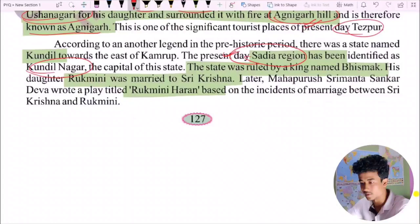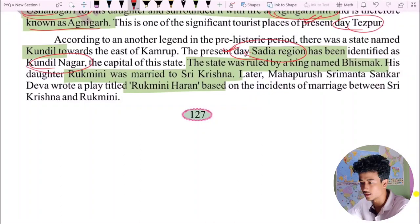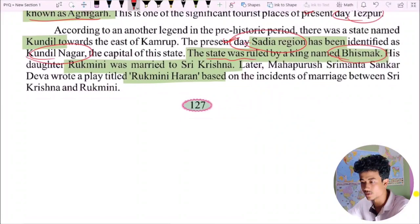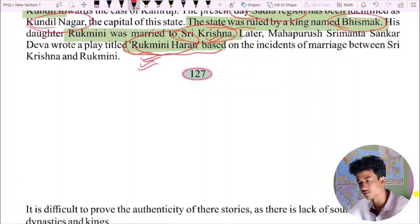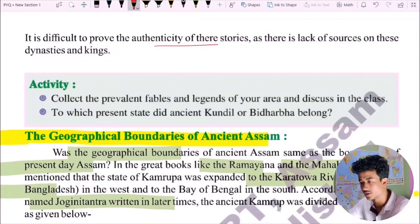The capital of that state was ruled by a king named Bhishmaka. His daughter Rukmini was married to Sri Krishna. It is difficult to prove the authenticity of these stories as there is a lack of sources on these dynasties and kings.